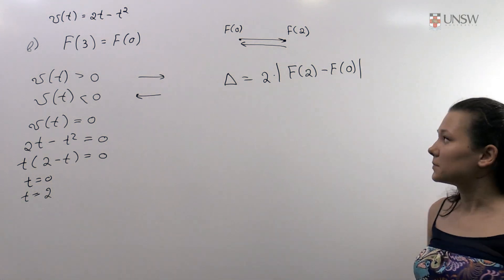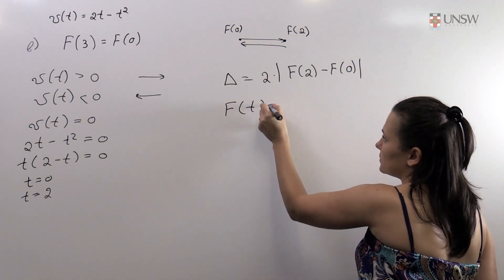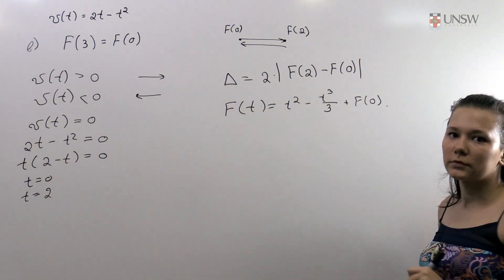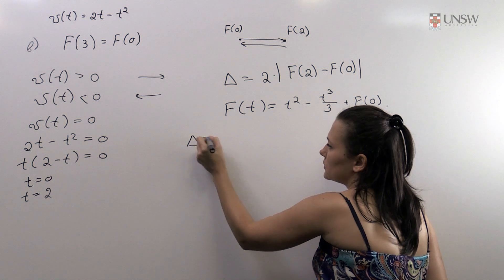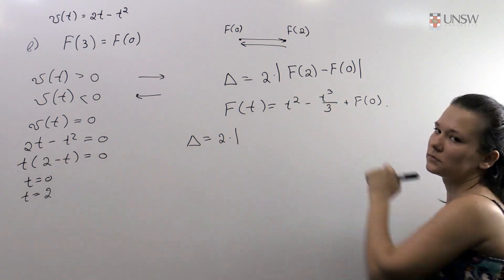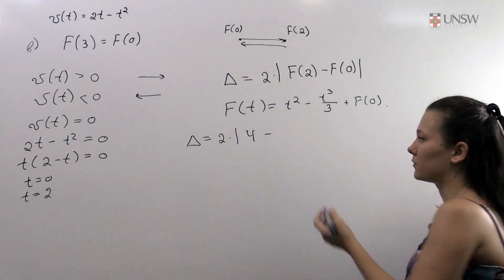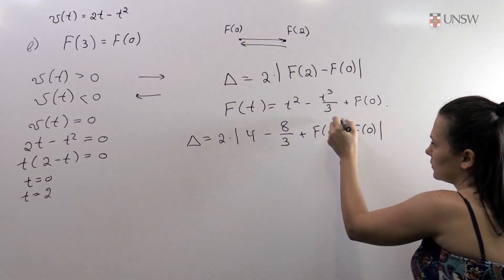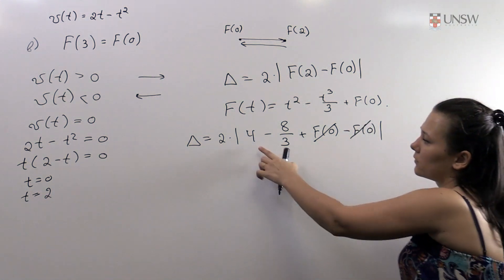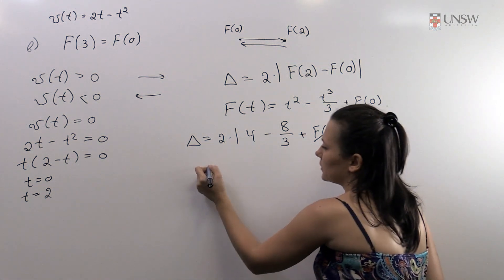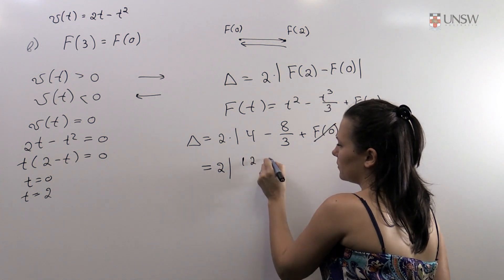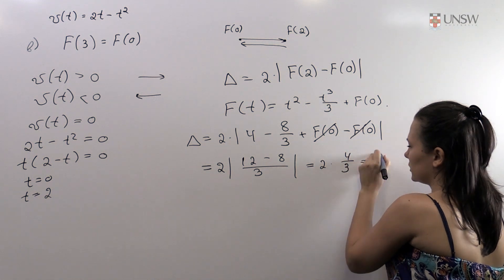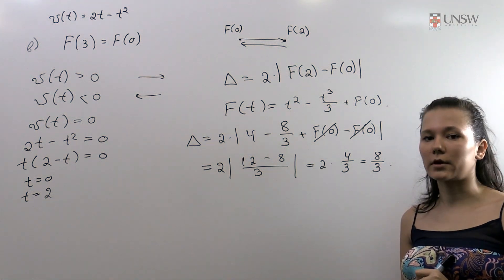We substitute t equals 2 into the displacement equation t squared minus t cubed over 3 plus f(0). So the total distance is 2 times: 2 squared is 4, minus 2 cubed over 3 is 8 over 3, plus f(0), minus f(0). The f(0) terms cancel out and we have 2 times (4 minus 8 over 3), which equals 2 times 4 over 3, giving us 8 over 3. This is the total distance traveled by the particle in three seconds.